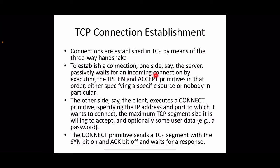In the case of a server, the server passively waits for an incoming connection by executing the listen primitive — simply listening whether somebody is requesting for its service. The server can listen to a particular source by specifying the source address, or it can simply listen in general, ready to serve anybody. On the client side, the client executes a connect request.